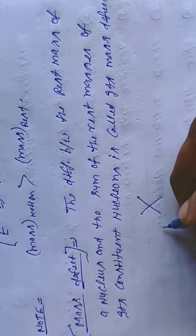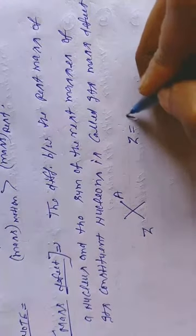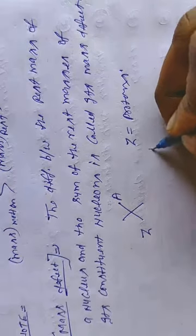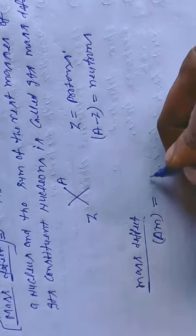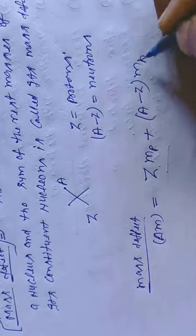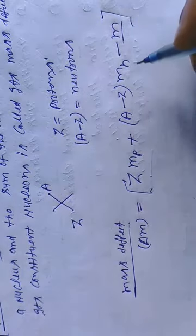Suppose we have an element where Z is the atomic number and A is the mass number, so Z protons and A minus Z neutrons. Mass defect, we denote delta m, equals Z times mass of proton plus A minus Z times mass of neutron minus its original mass. This is the mass defect formula, where m is rest mass.